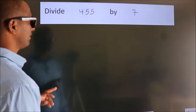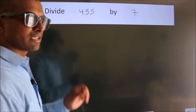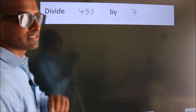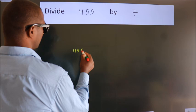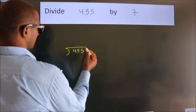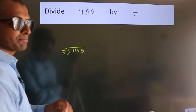Divide 455 by 7. To do this division, we should frame it in this way. 455 here, 7 here. This is your step 1.